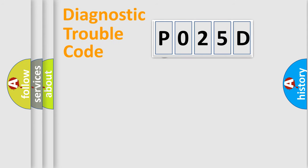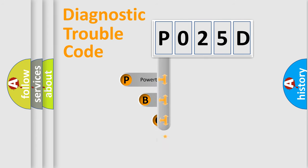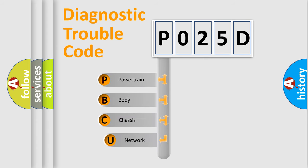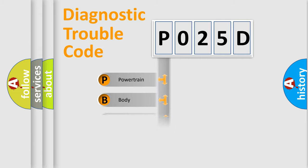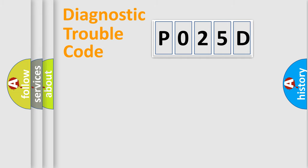First, let's look at the history of diagnostic fault code composition according to the OBD2 protocol, which is unified for all automakers since 2000. We divide the electric system of the automobile into four basic units: Powertrain, Body, Chassis, and Network.